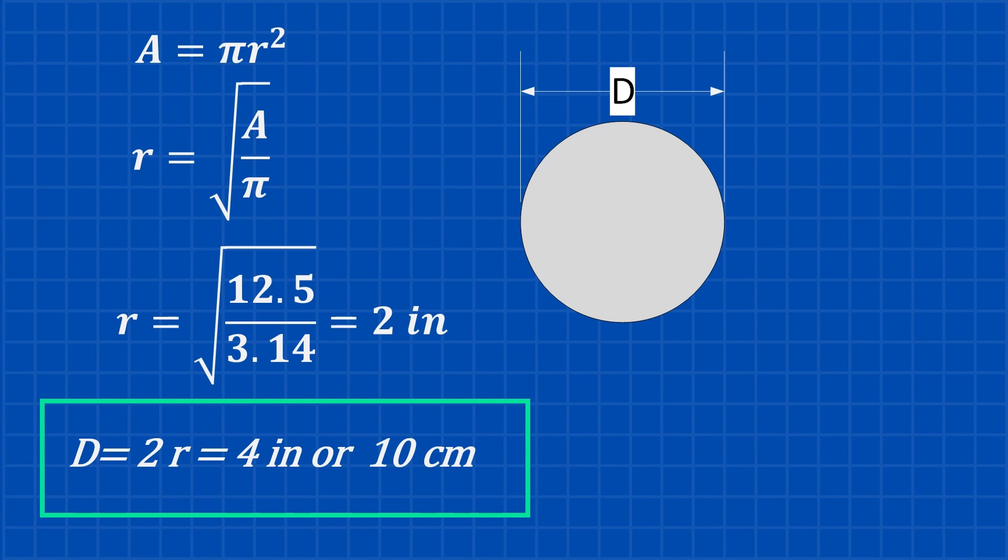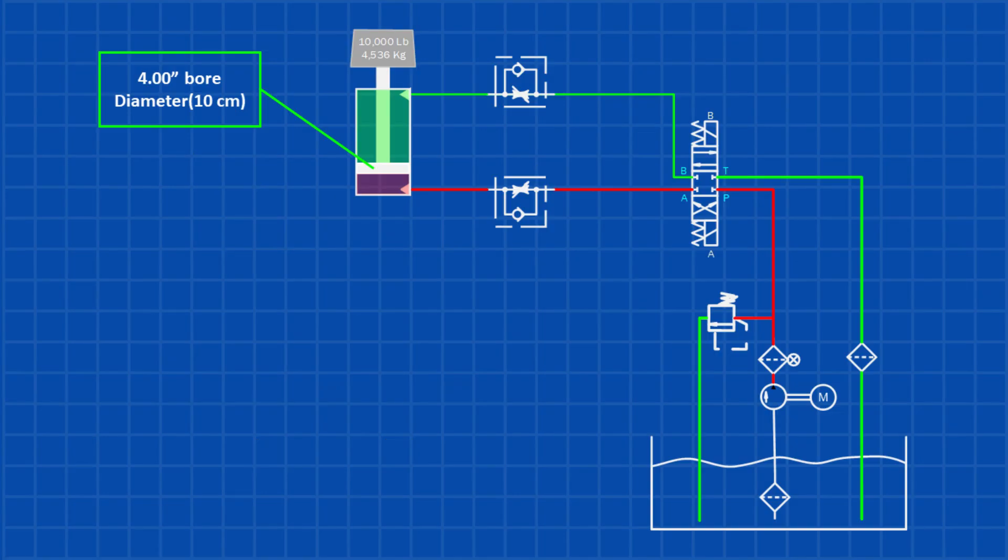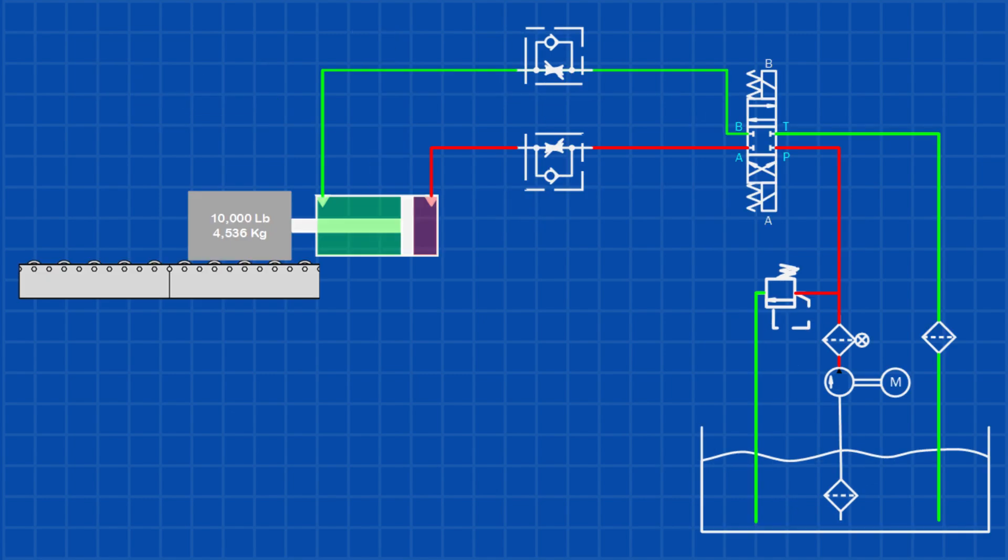So we need a cylinder with a minimum of a 4-inch bore or 10 centimeters. Since we're designing for a vertical lift, we're mainly working with mass and gravity. But if this were a horizontal movement, the calculation would be different because we'd have to factor in friction. That's a whole other topic for another tutorial.